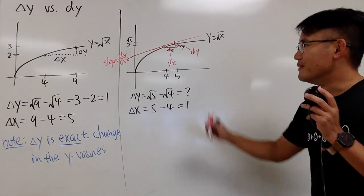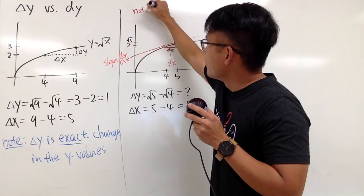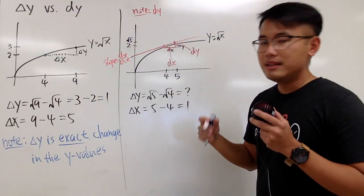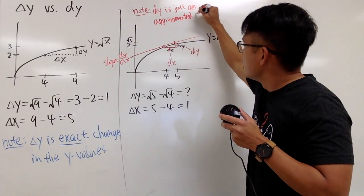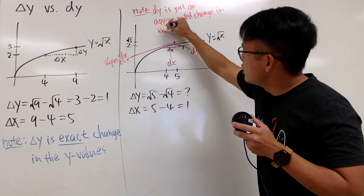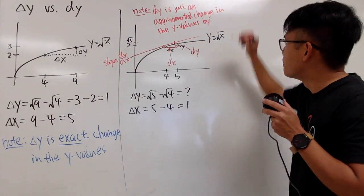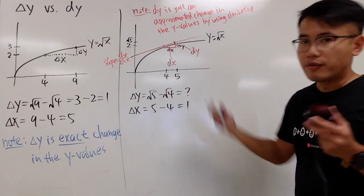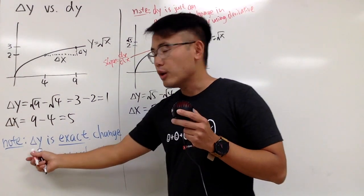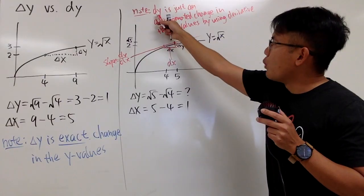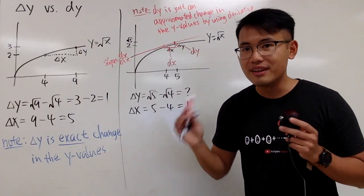And now you may be wondering, what exactly is dy? First, it has a special name. This is called the differential. But more importantly, you have to remember the following. dy, it's also a change, but this right here is just approximated change in the y values. And the key right here is by using derivative, of course, because we are talking about the slope of the tangent line. So this is the main difference. Delta y is the exact change, and dy is just the approximated change for the actual change. And to do dy, you have to use derivative. That's the main key.